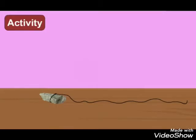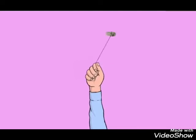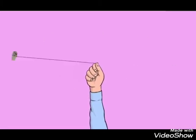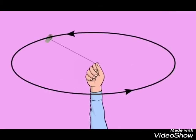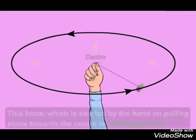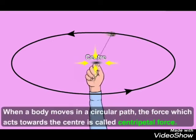Look at this activity. Tie a small piece of stone with a string about 1 meter long. Hold the string tightly in your hand and rotate it. Do you have to apply force? Does the stone try to pull your hand away? Your hand exerts a continuous force on the stone to maintain its rotation in the same circle. This force, which pulls the stone towards the center, is centripetal force.